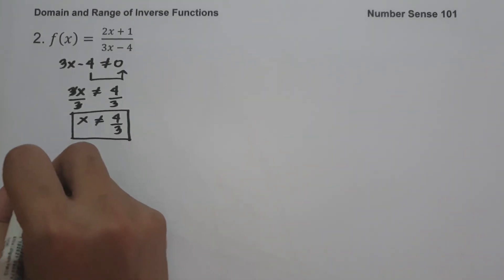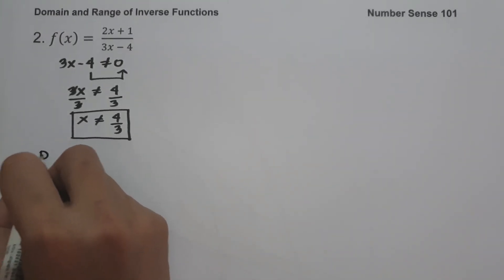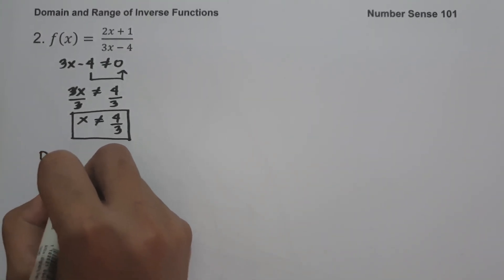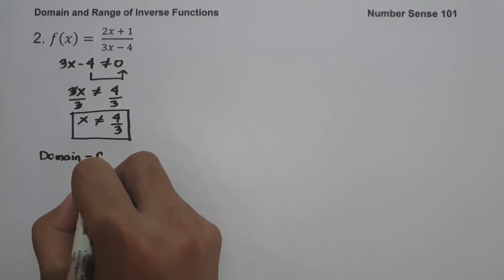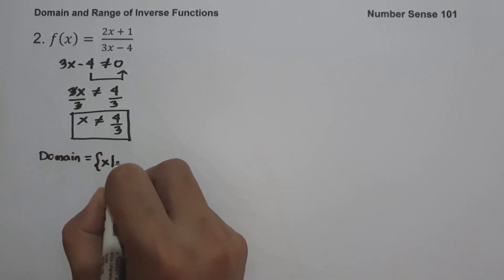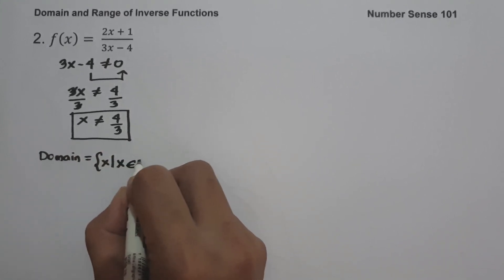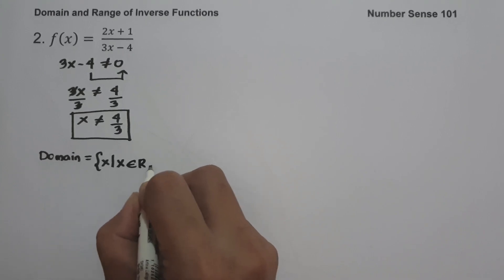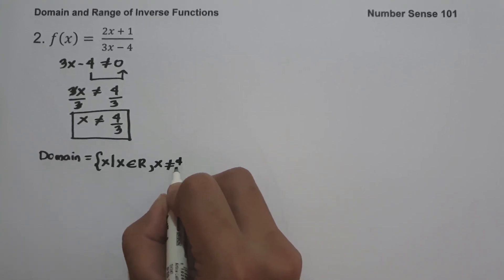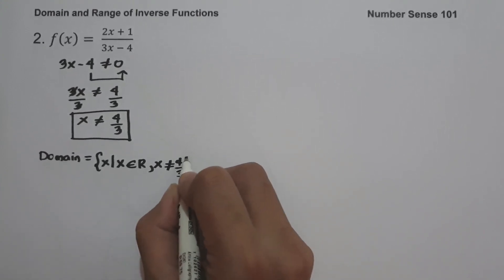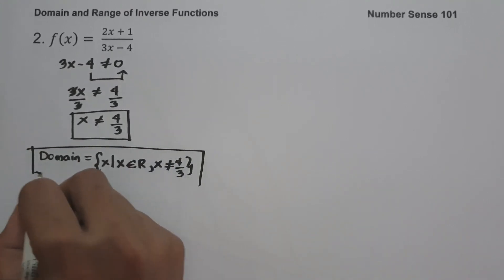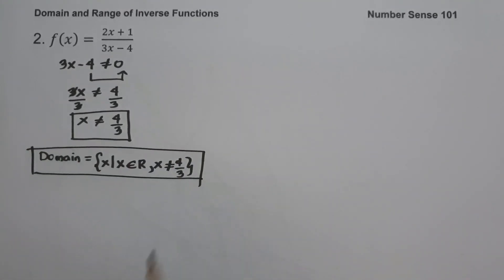So to write the domain, the domain is the set of x values such that x is the set of all real numbers except 4 over 3. This will be the domain of the given function.